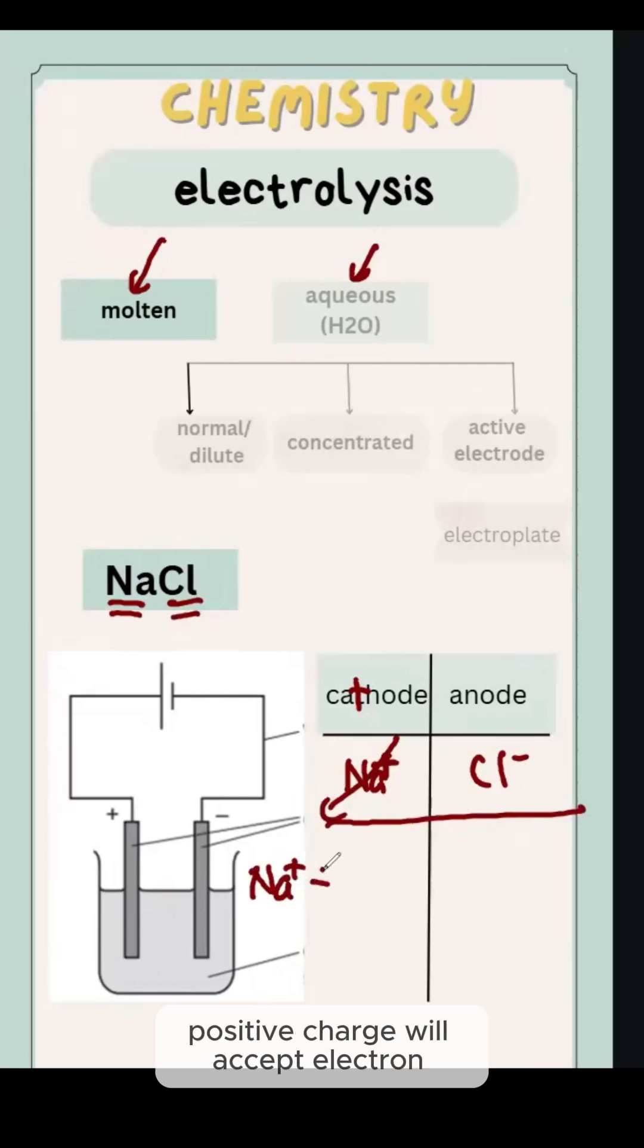Positive charge will accept electron to become neutral. While negative charge ion will remove electron to become neutral.